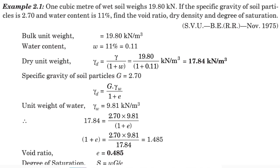The unit weight of water, gamma w, is 9.81 kN per meter cube. We can substitute all the values, so 17.84 equals 2.70 times 9.81 divided by 1 plus e. From that we can find the e value equals 0.485.